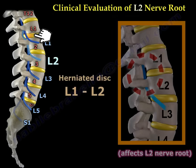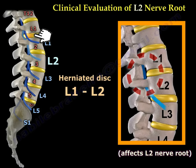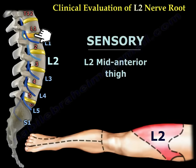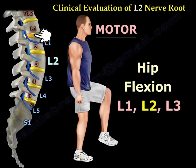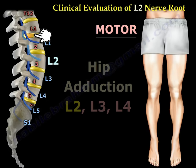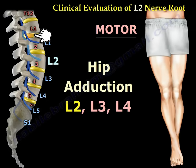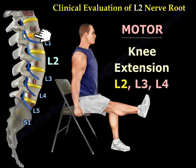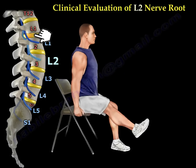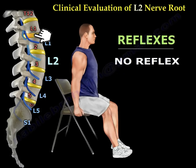Disc herniation between L1 and L2 will affect the L2 nerve root. The sensory changes will be in L2 mid-anterior thigh. The motor will be hip flexion (L1, L2, and L3), hip adduction (L2, L3, and L4), and knee extension (L2, L3, and L4). There is no reflex for the L2 nerve root.